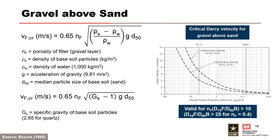Bronze in 1985 measured critical Darcy velocities for gravel above sand. Bronze's law is the simplest formula to use and gives a good approximation of critical Darcy velocity for gravel above sand. Note that the figure converts the results of the formula from meters per second to centimeters per second for plotting and interpretation purposes.